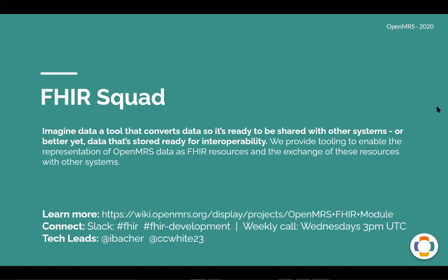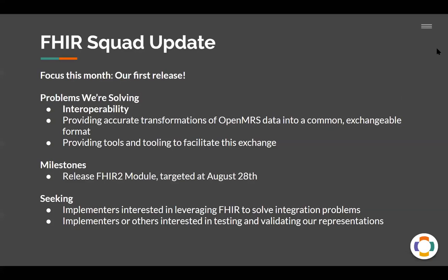So that's kind of the focus of our squad. Right now, the main thing that we're working on is a module for OpenMRS that represents the OpenMRS data as FHIR resources. What we're working on this month is trying to get to our first release. We've been working on this for a few months now. Our goal is to have a FHIR REST API so that you can access lots of OpenMRS data using FHIR and get that in a properly formatted FHIR message.